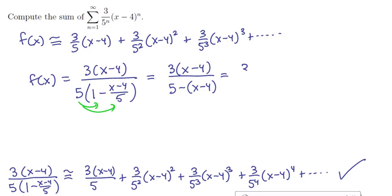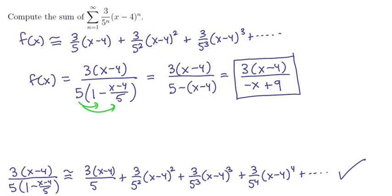And so if we clean that up, we have 3 times (x minus 4) on the top. And on the bottom we have 5 minus minus 4 times plus negative x, or negative x plus 9. And so there's our function who has the given Taylor series, the sum of our series.